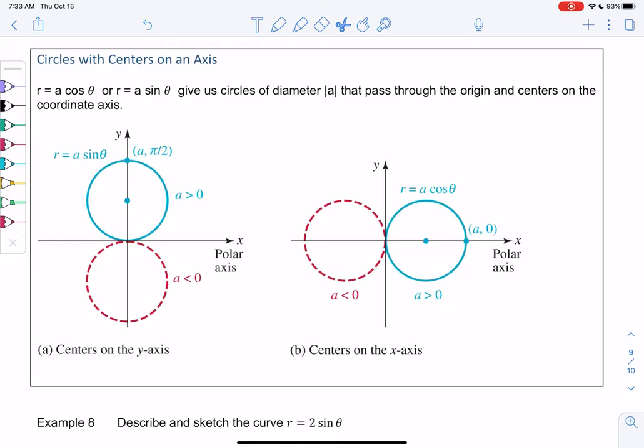We learned early in the section that r equals A is a circle centered at the origin. These are different circles - they're no longer centered at the origin. If we get r equals A cosine theta or A sine theta, similar to rose curves but without a coefficient, we get circles.